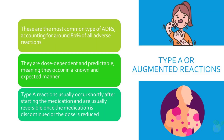Type A, or Augmented Reactions, are the most common type of ADRs, accounting for around 80% of all adverse reactions. They are dose-dependent and predictable, meaning they occur in a known and expected manner. For example, antihistamines are known to cause drowsiness, which is a predictable and expected side effect. Type A reactions usually occur shortly after starting the medication and are usually reversible once the medication is discontinued or the dose is reduced.